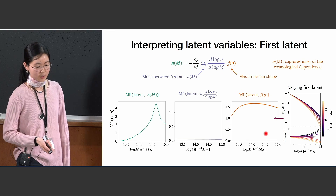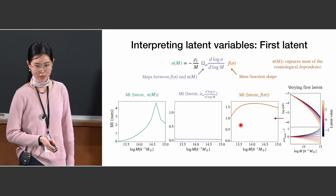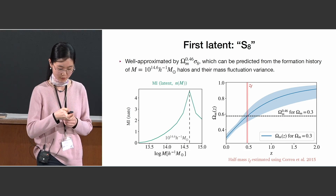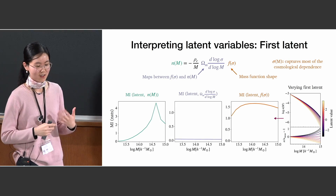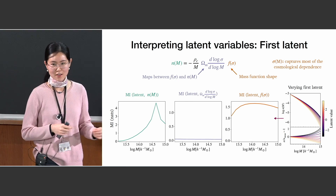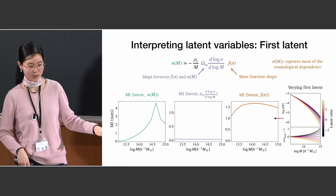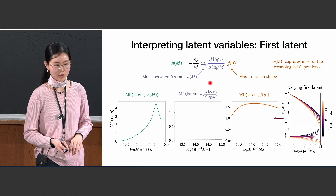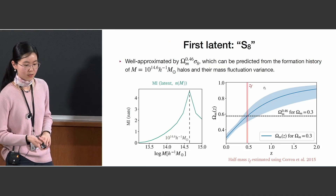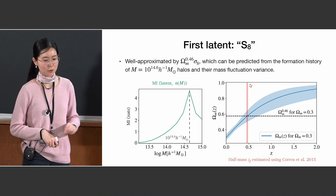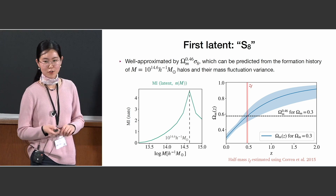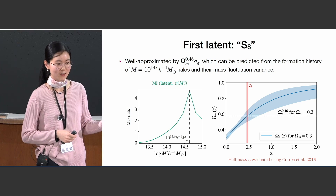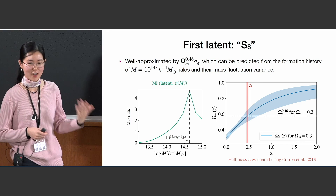The bottom plot shows the mutual information between the first latent variable and these different components. The y-axis gives the mutual information — the higher it is, the more information the latent has on that component. It shows that this latent is mostly learning about the high mass tail of the halo mass function, and it is mainly learning about the f(sigma) part while learning very little information about the mapping term.